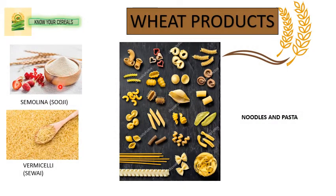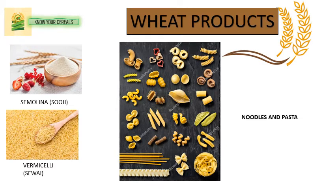Semolina is also a wheat product — in Bengali we call it shuji. Sewai, which in English we call vermicelli, is also a wheat product. Noodles and pasta — including every variety like fettuccine, penne pasta, and others like rotelle — all have different names, textures, shapes, and colors, and all are made from wheat. There is a special type of wheat used for making noodles and pastas known as durum wheat, and the durum flour made from it is mainly used for preparing these products.